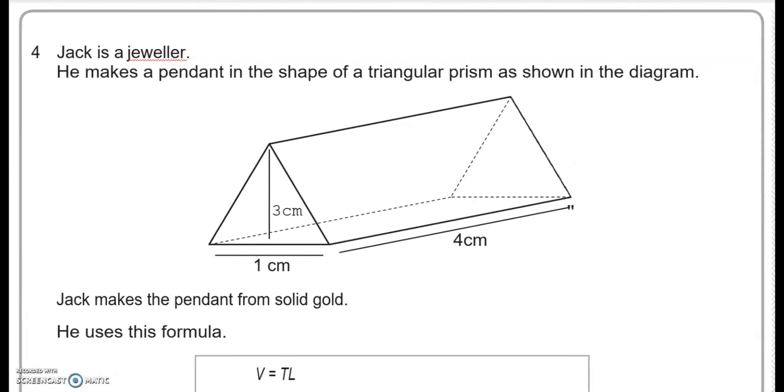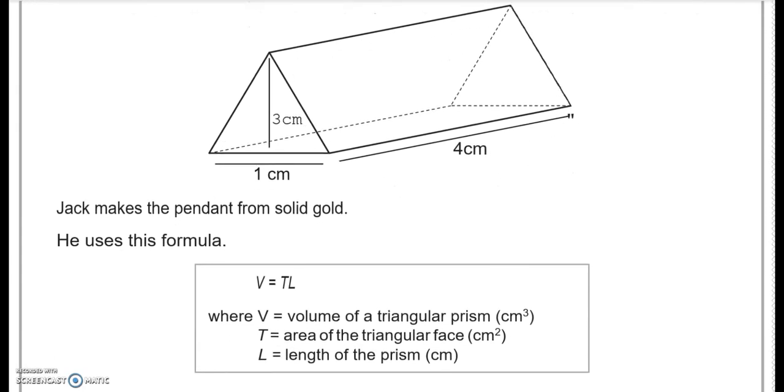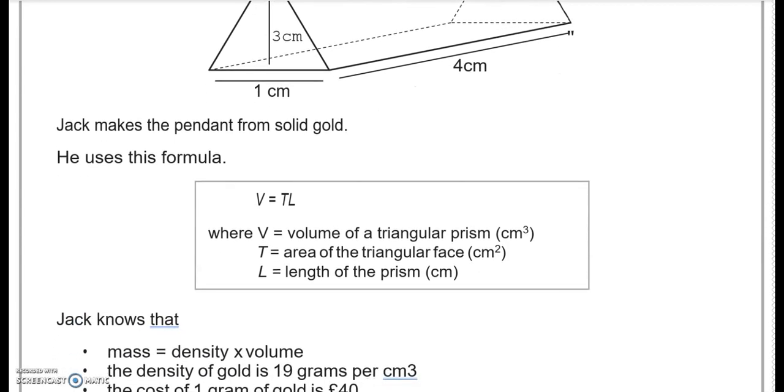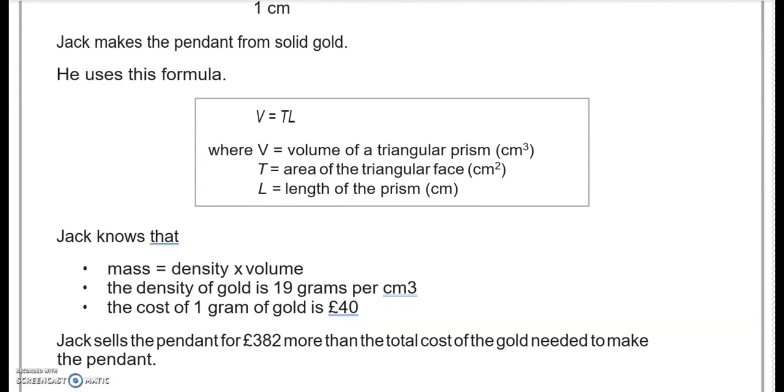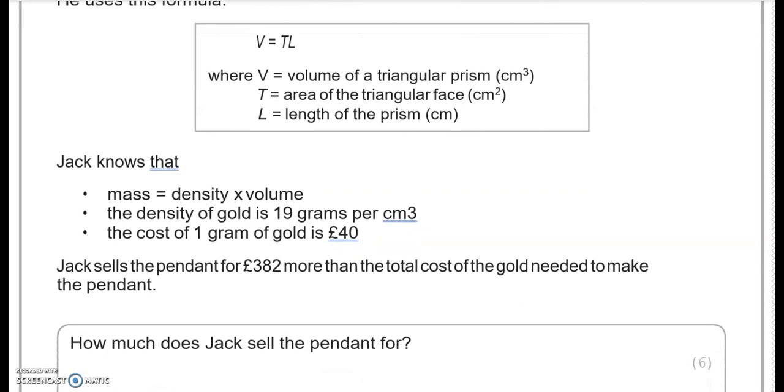Question 4. Now Jack is a jeweller. He makes a pendant in the shape of a triangular prism as shown in the diagram. Jack makes a pendant from solid gold. He uses this formula. V equals T times L, where V is the volume of a triangular prism, T is the area of the triangular face, L is the length of the prism. Jack knows that mass is equal to density times volume. The density of gold is 19 grams per cubic centimeter. The cost of one gram of gold is 40 pounds. Jack sells the pendant for 382 pounds more than the total cost of the gold needed to make the pendant. How much does Jack sell the pendant for?